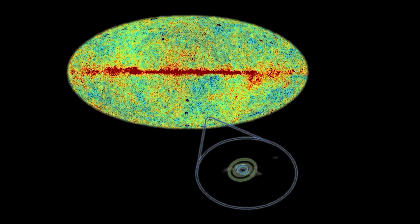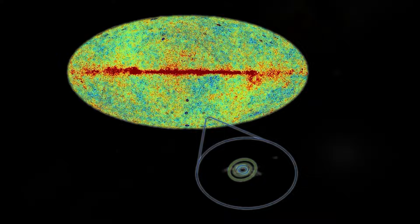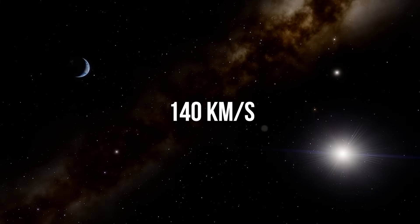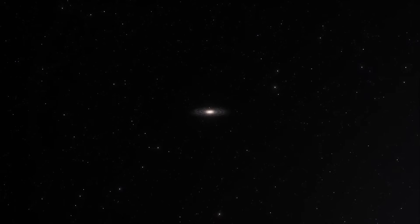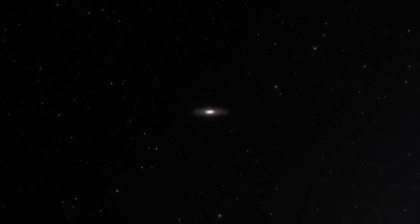In practical terms, this means that an object located 1 megaparsec away from us is receding at a rate of 70 kilometers per second. If it's 2 megaparsecs away, the recession speed doubles to 140 kilometers per second, and so on, making the universe's dynamics even more intriguing.